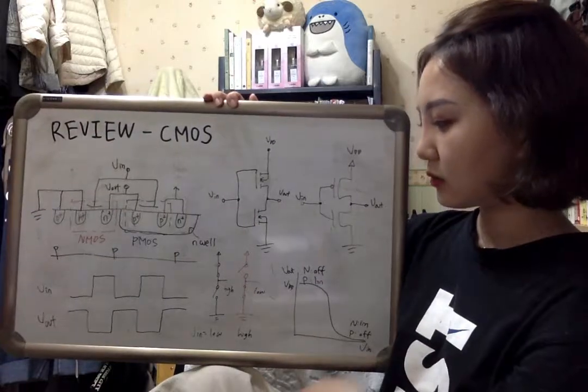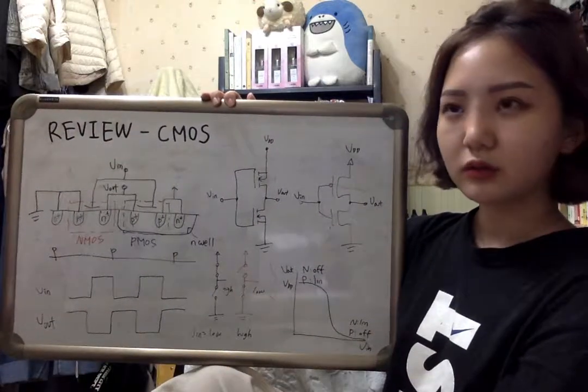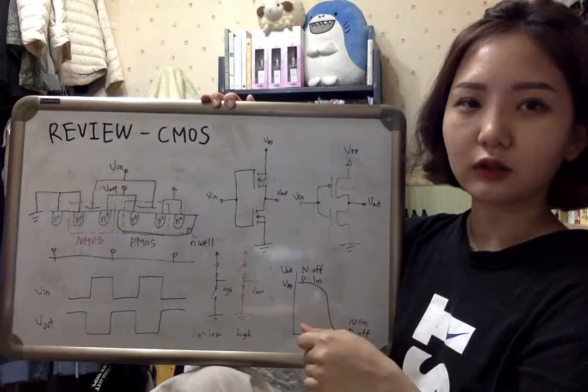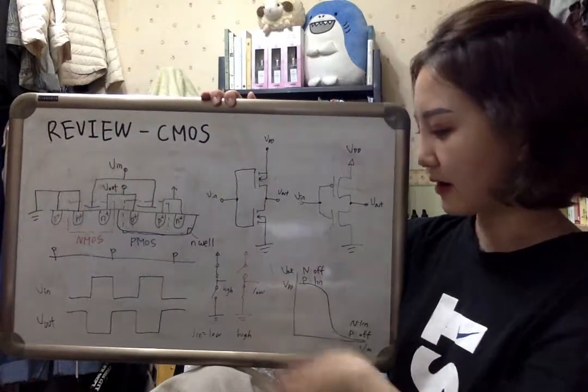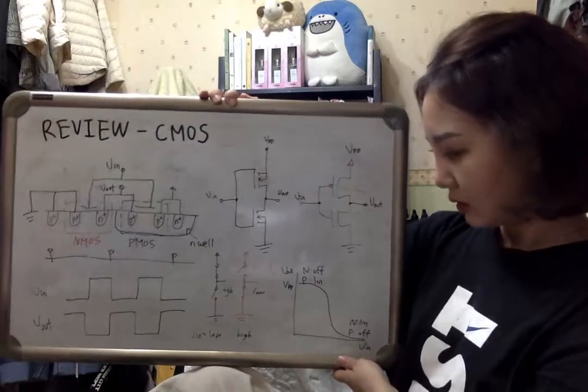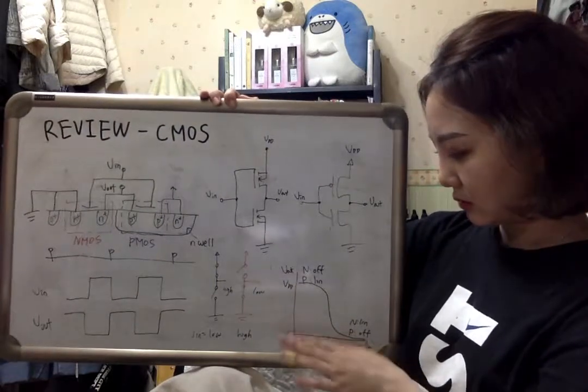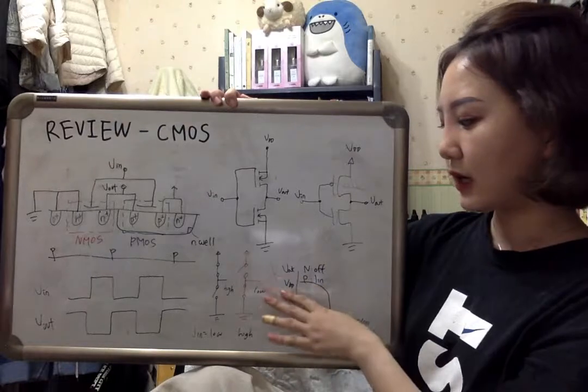So with these results, we can draw the relationship of input and output voltage as a graph. In low input, we can get high output.